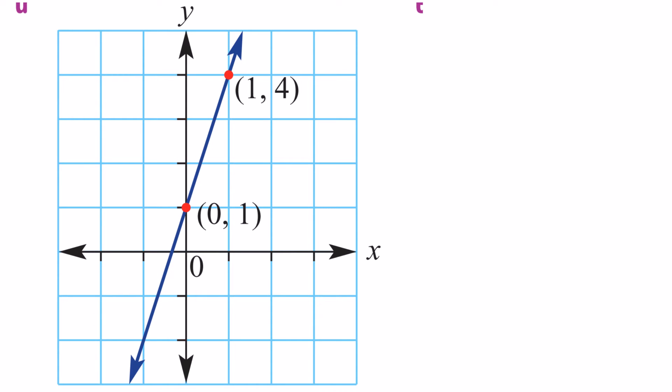So looking back at the line here, the first thing that we need to do is find two points on the line that we know the exact coordinates of. So in this case, we have 1, 4, and we have 0, 1. It's good to use these two points to find the gradient because we know exactly those points on the line.